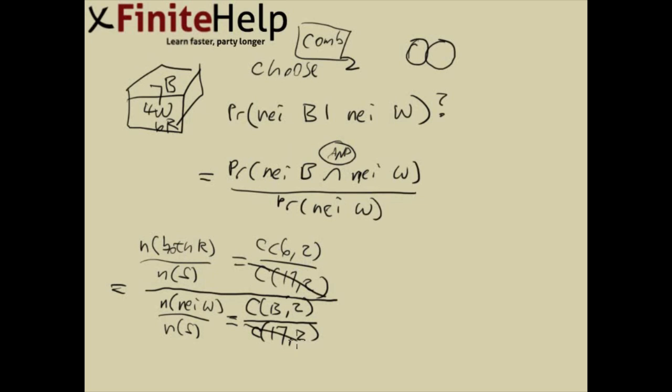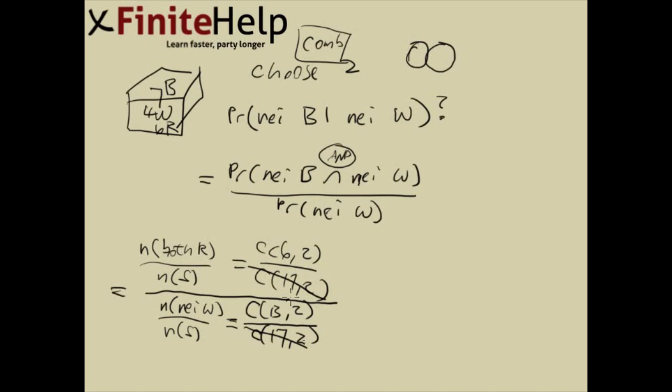Here we can cancel out the 17 choose 2. And some of you might ask, well, why do we even write it if we're going to cancel them out? Can I just not write it? Well, you're going to be right most of the time if you don't write it, but there are situations that they are going to be different. So I would suggest you to write it every time, since we're doing probabilities, top and bottom. And they're usually going to be the same, but sometimes they are different.